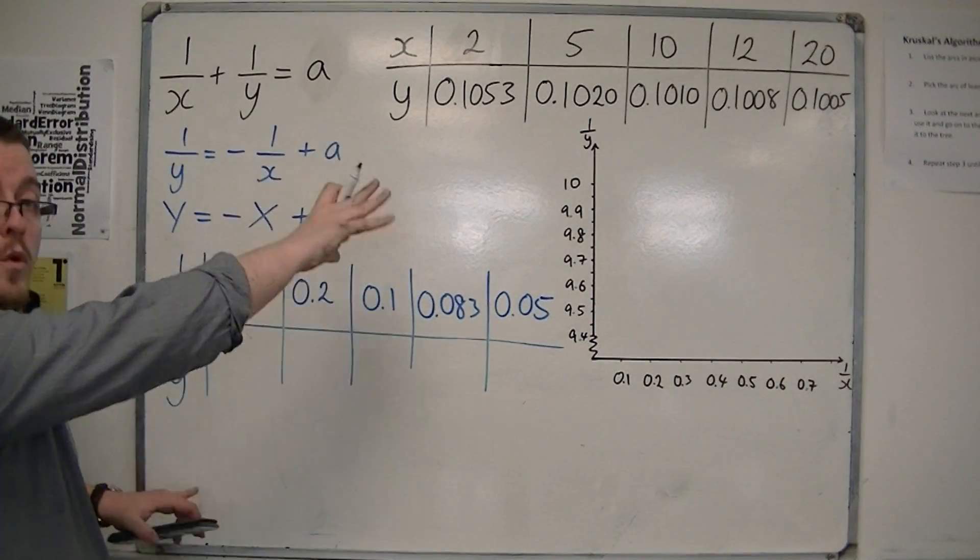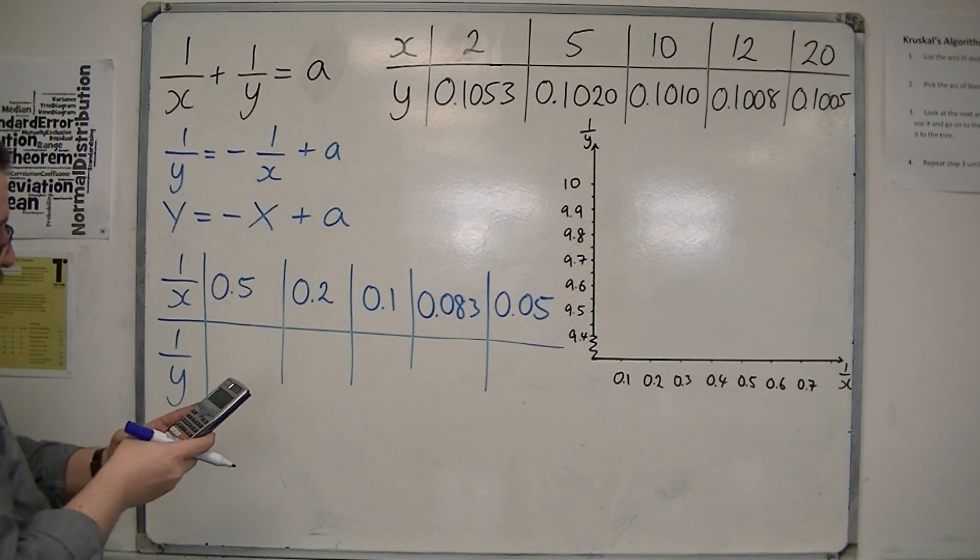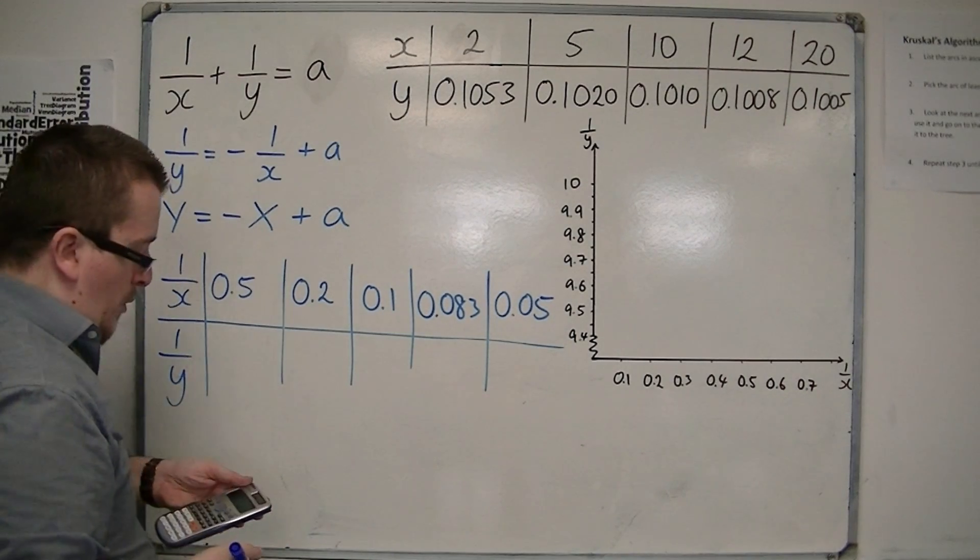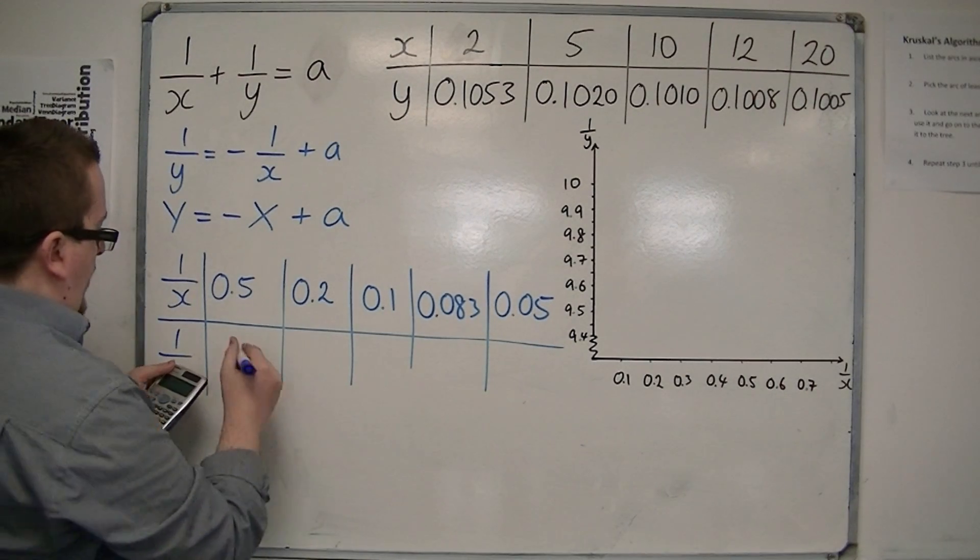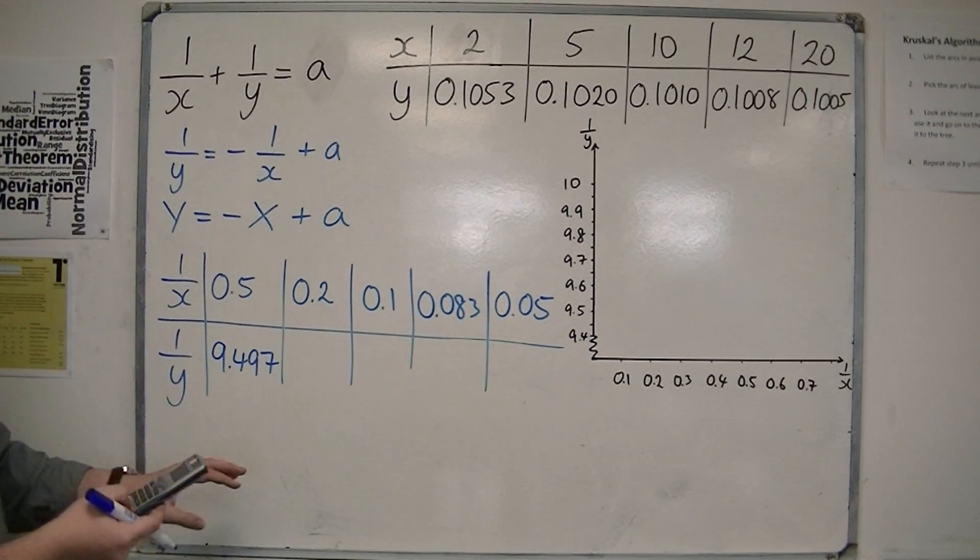And then I'm going to do 1 over y, so I'm going to do 1 over each of these, so 1 divided by 0.1053 is 9.496, so 9.497. I'm going to go to three decimal places.